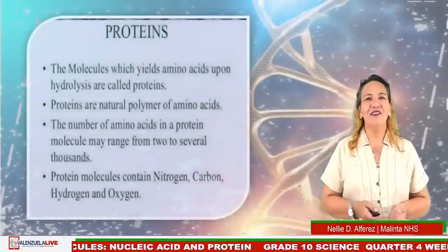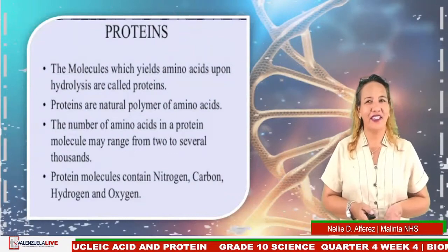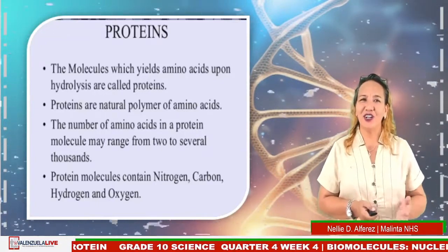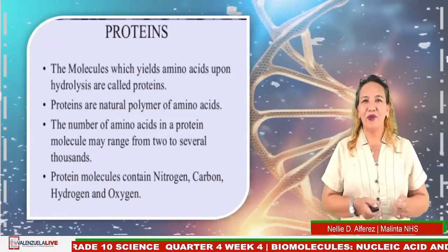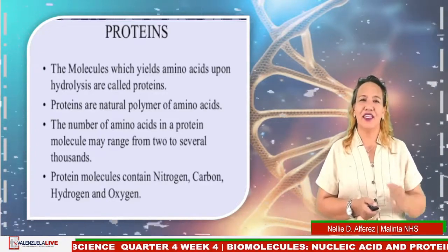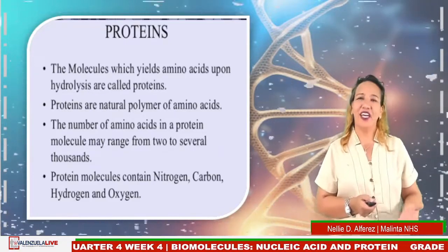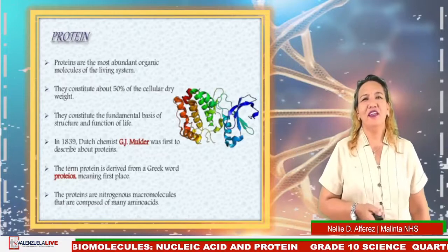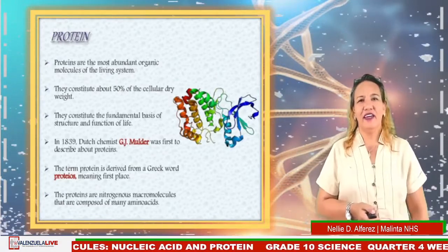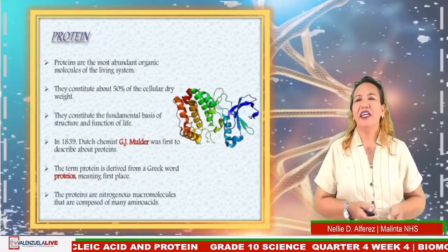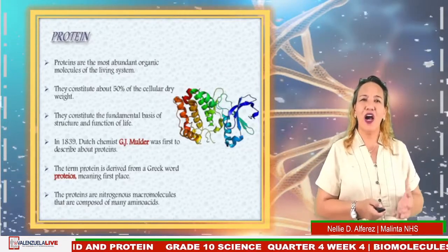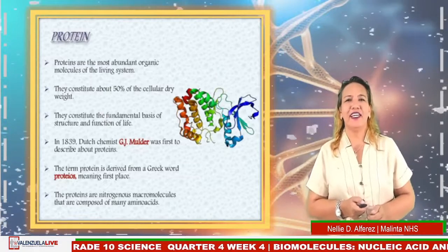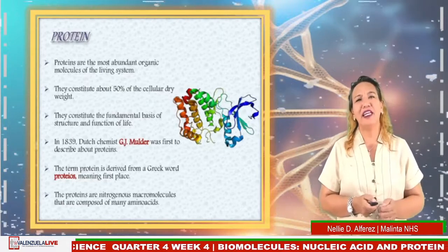Now another biomolecule will be discussed — protein. Molecules that yield amino acids upon hydrolysis are called proteins. Proteins are natural polymers of amino acids. The number of amino acids in a protein molecule may range from two to several thousand. Protein molecules contain nitrogen, carbon, hydrogen, and oxygen. Proteins are the most abundant organic molecules in living systems. In 1839, Dutch chemist Gerardus Johannes Mulder was the first to describe proteins. The term protein is derived from the Greek word meaning 'first place.'